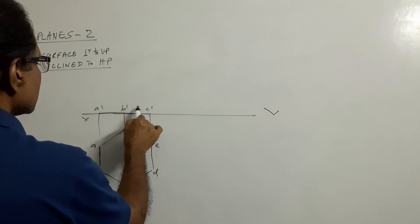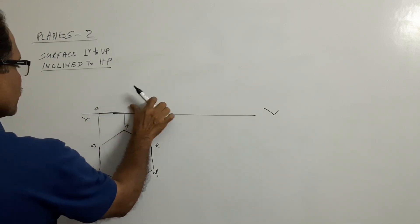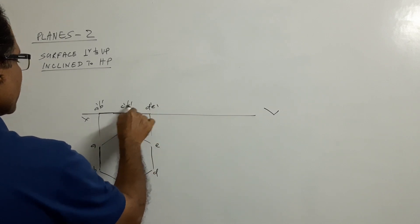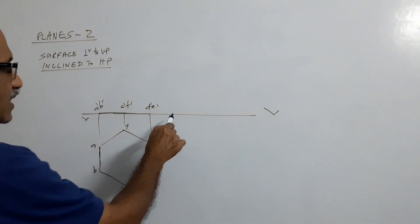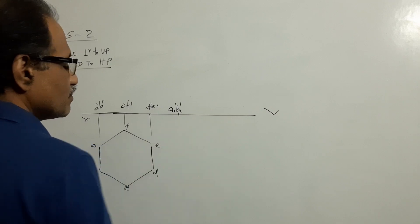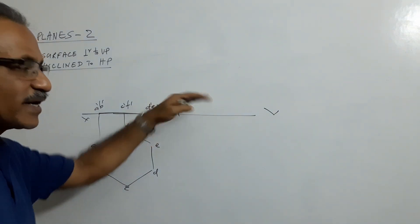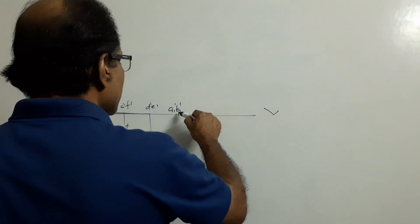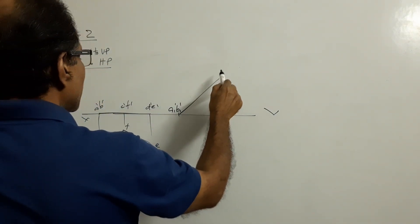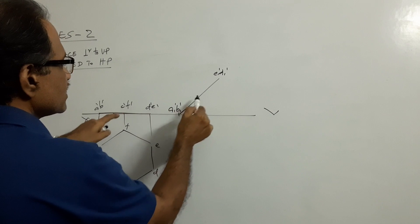Label the points: A dash, B dash, C dash, D dash, E dash, F dash. Take A1 dash, B1 dash anywhere. What is A1 dash B1 dash? It is this point with the suffix one. Then draw a 40 degree line, take this distance in your compass and mark.